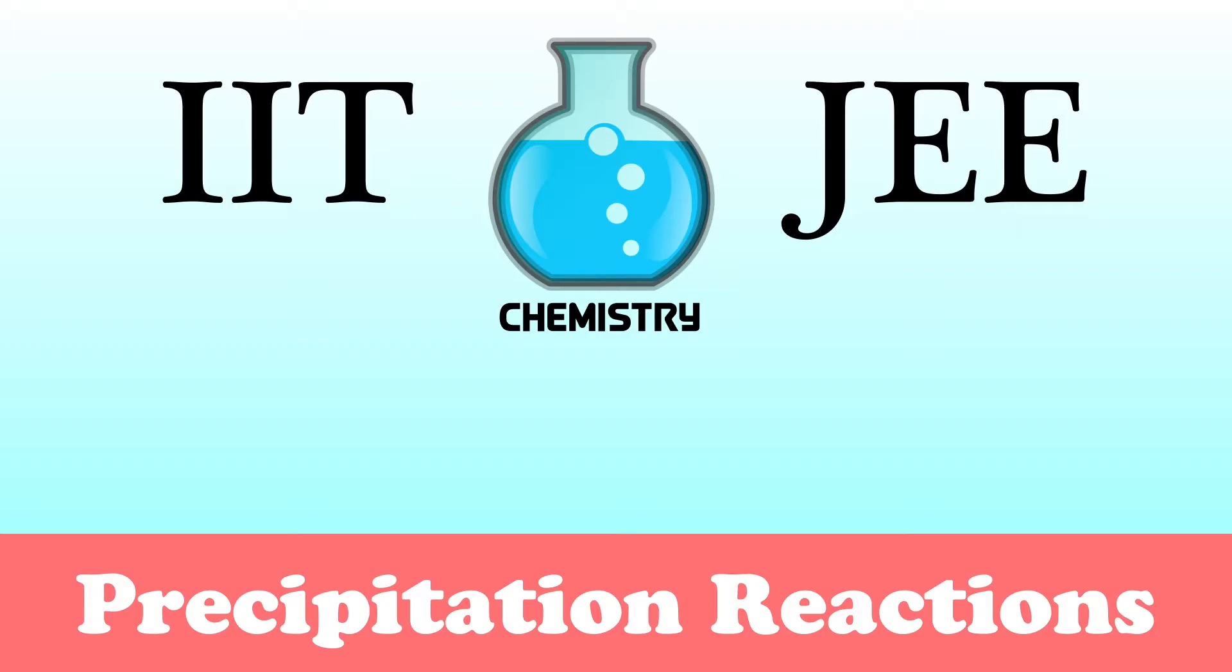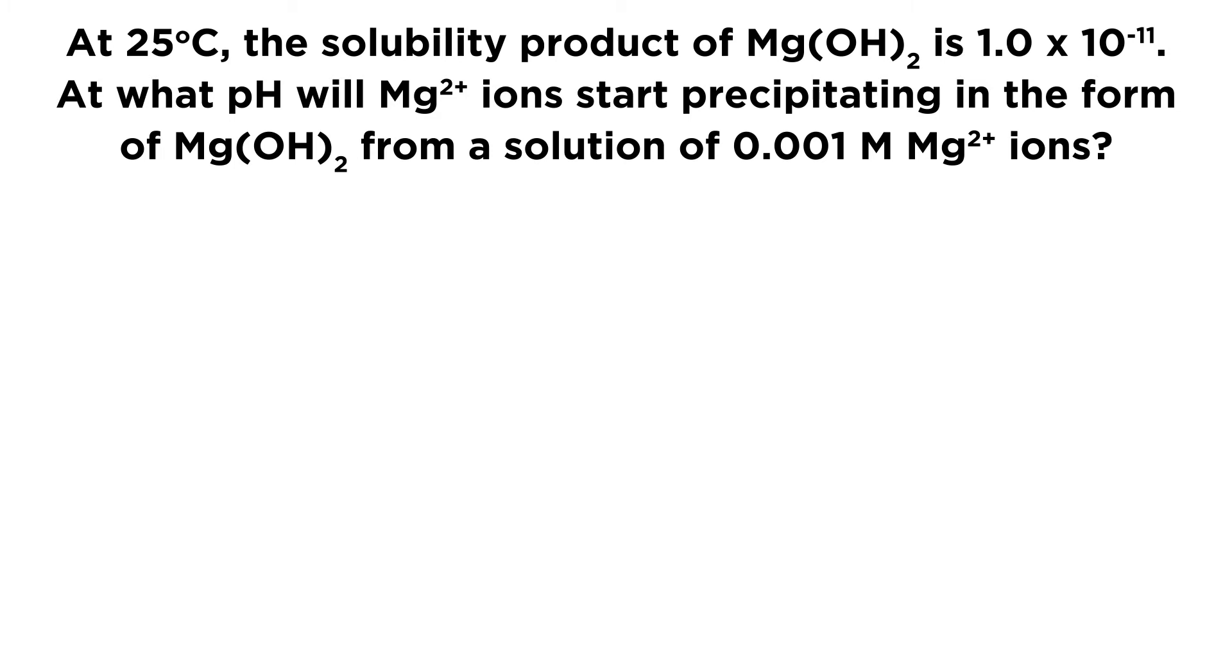Okay, let's check out a question regarding precipitation reactions. This asks, at 25 degrees Celsius, the solubility product of Mg(OH)₂, or magnesium hydroxide, is 1.0 times 10 to the negative 11. At what pH will magnesium 2+ ions start precipitating in the form of magnesium hydroxide from a solution of 0.001 molar magnesium ions?